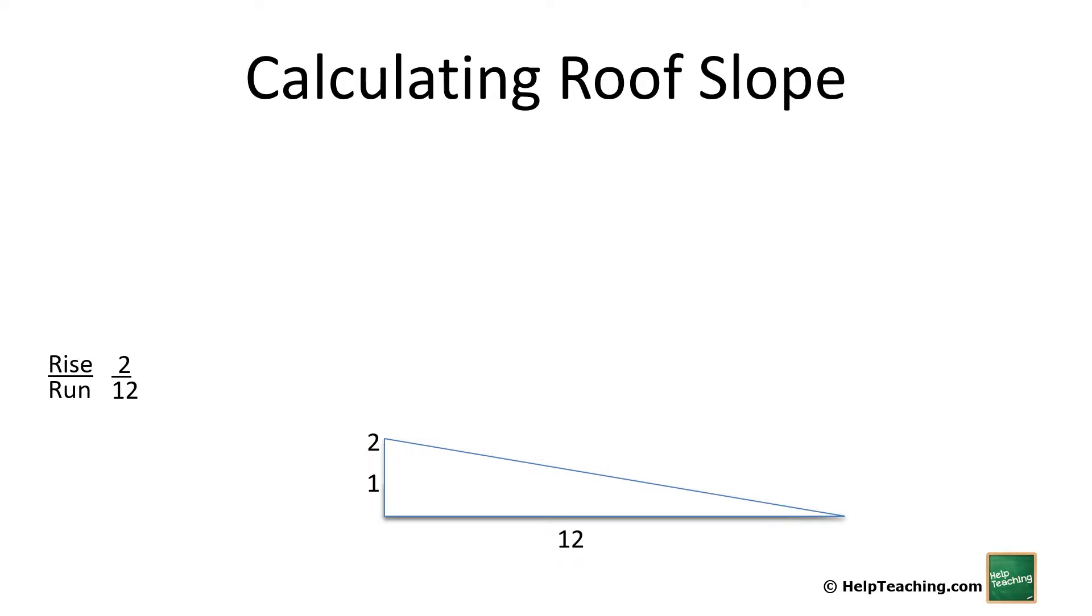So here's a 3:12 or 3 in 12, or 4 in 12. Some slightly different terminology depending on what part of the world you're in. So we go up to a 6:12 slope.